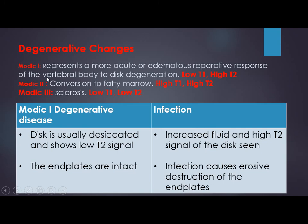Degenerative change of the spine follows the Modic classification. Modic 1 is edema and reparative process — it appears low T1, high T2. Modic 2, when there is conversion to marrow fat — high T1, high T2. Modic 3, when it becomes sclerotic — low T1, low T2. Sometimes there is difficulty differentiating Modic 1 from infection: in Modic 1, the disc is usually desiccated — dry with low T2 signal — while in infection there is increased fluid and high T2 signal of the disc. In Modic 1 the endplates are intact and regular, while in infection there is erosive destruction of the endplates.